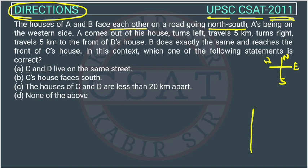A and B's houses face each other. Suppose A is on the west side — so A's house is on the west side. A comes out of his house, so he will face east. He then turns left, meaning he is now facing north and going in that direction.